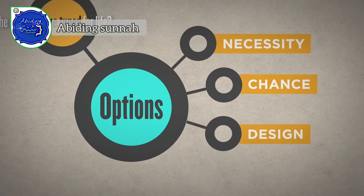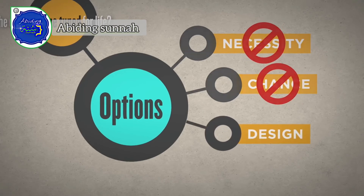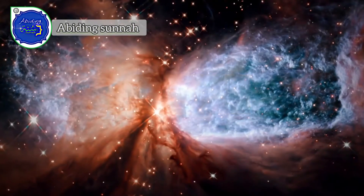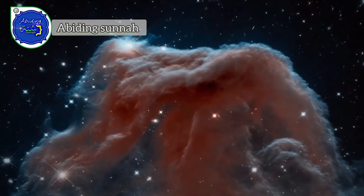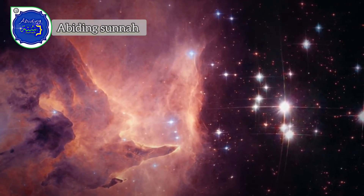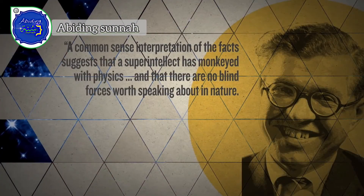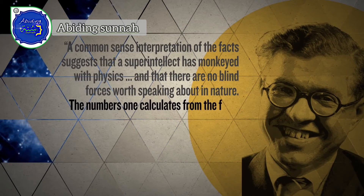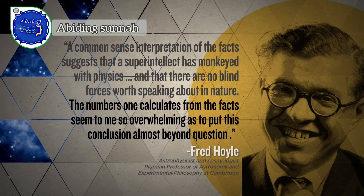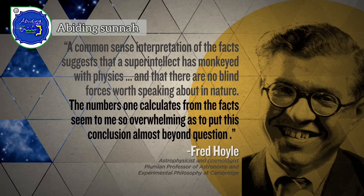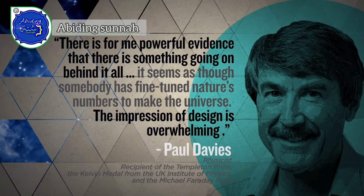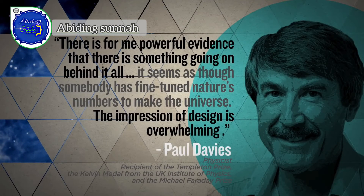Given the implausibility of physical necessity or chance, the best explanation for why the universe is fine-tuned for life may very well be that it was designed that way. A common-sense interpretation of the facts suggests that a super-intellect monkeyed with physics, and that there are no blind forces worth speaking about in nature. The numbers one calculates from the facts seem so overwhelming as to put this conclusion almost beyond question. There is powerful evidence that there is something going on behind it all — it seems as though somebody has fine-tuned nature's numbers to make the universe. The impression of design is overwhelming.